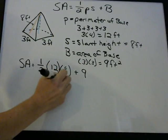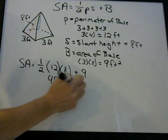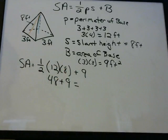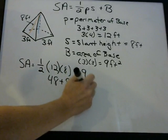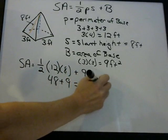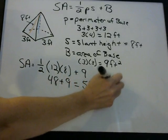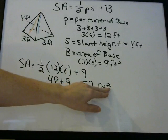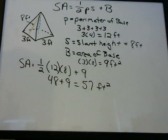You can do that with your calculator. So 48 plus 9 is 57 feet squared. Remember, this is an area problem, so your units are always going to be squared — square feet.